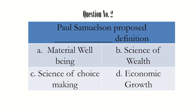Material well-being was given by Alfred Marshall, so that is not the option. Science of wealth was given by Adam Smith, so that is also not the right option. Option C, science of choice making in the presence of scarcity, was given by Lionel Robbins. So the right answer is D - economic growth. Paul Samuelson proposed the economic growth definition.